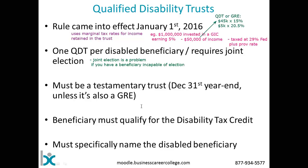It has to be a testamentary trust, but it doesn't necessarily have to be established by the will. It can be a graduated rate estate and a testamentary trust. It's normally going to have a December 31st year-end unless it's also the graduated rate estate, which can only exist for the first 36 months after death.